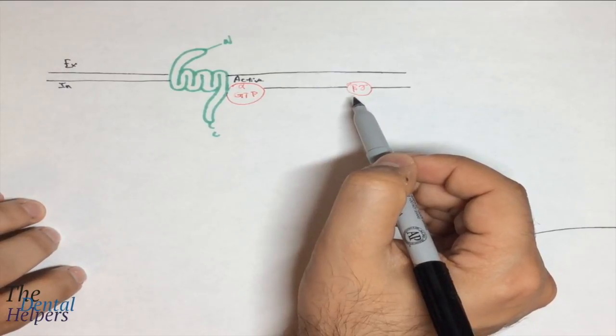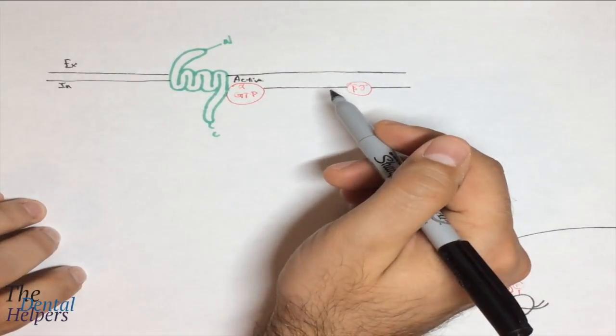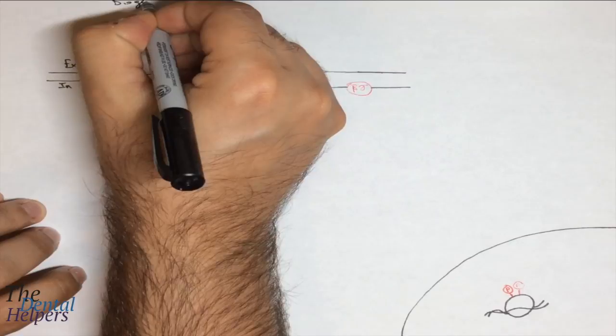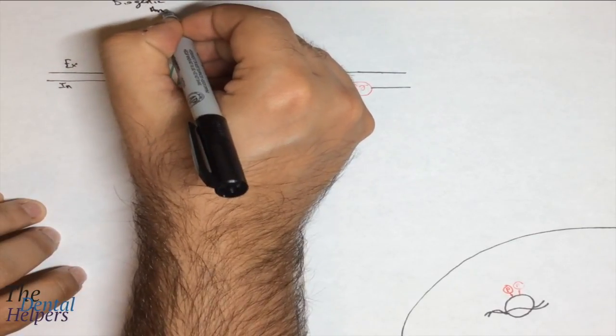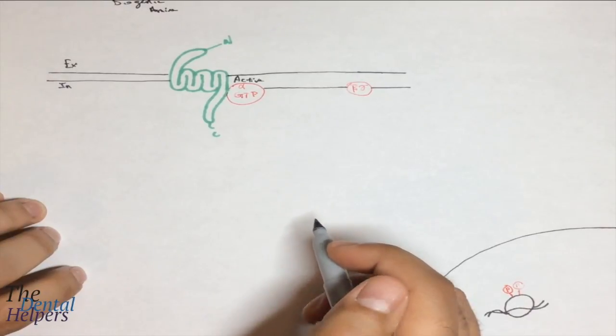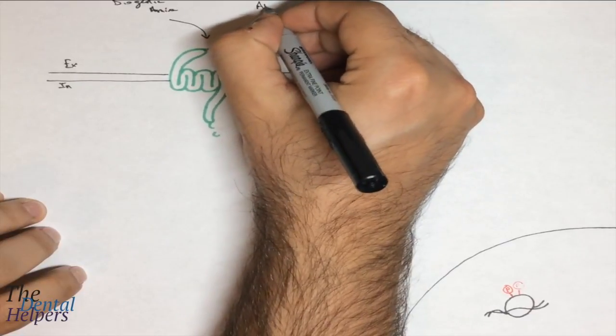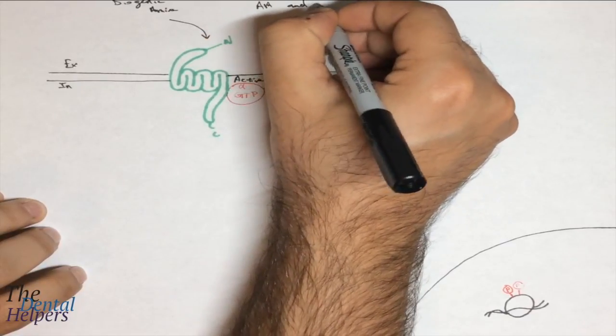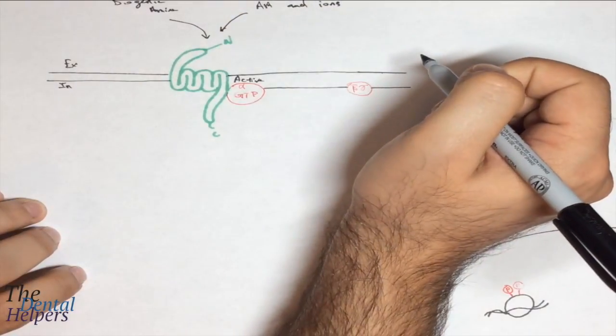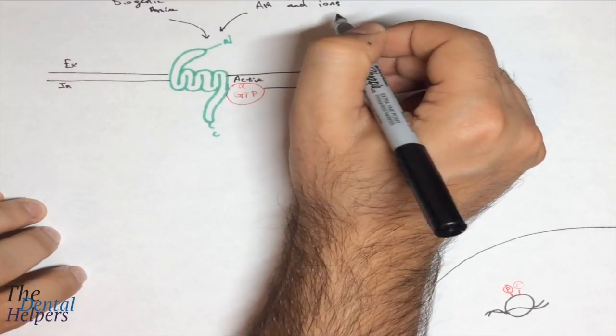We have different types of interactions that can occur to initiate this activation. We can have biogenic amines - basically noradrenaline, dopamine, histamines, and acetylcholine - that can bind to the receptor and activate. You can have different amino acids and ions, and some examples are glutamate, calcium, and GABA.